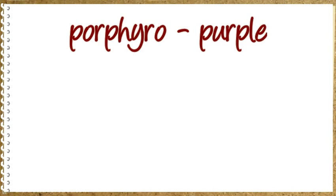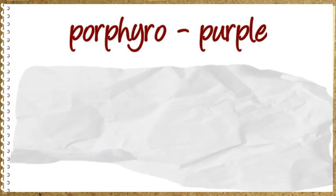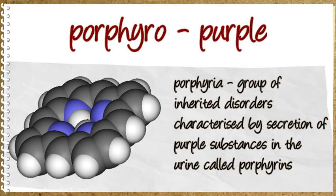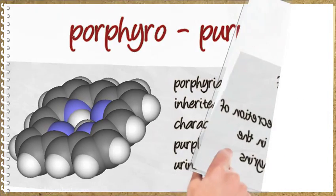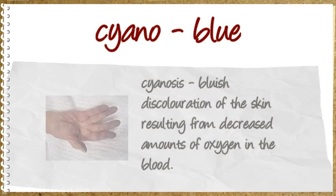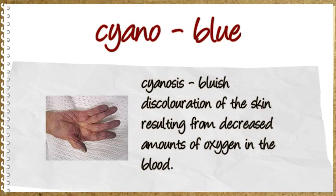Porphyro means purple. Porphyria: group of inherited disorders characterized by secretion of purple substances in the urine called porphyrins. Cyano means blue. Cyanosis: bluish discoloration of the skin resulting from decreased amounts of oxygen in the blood.